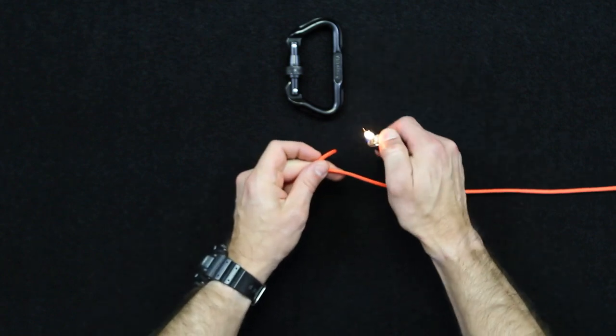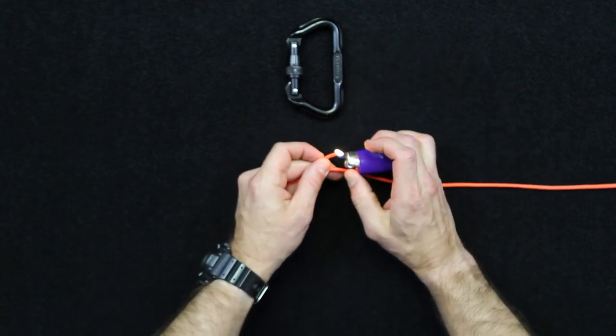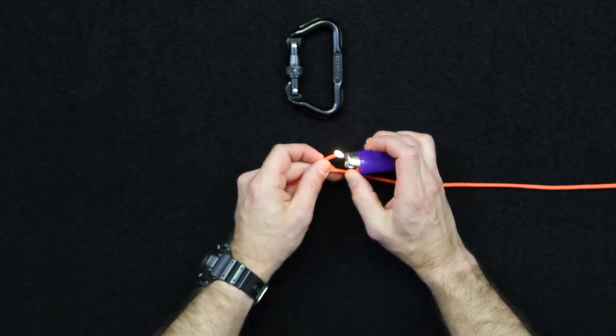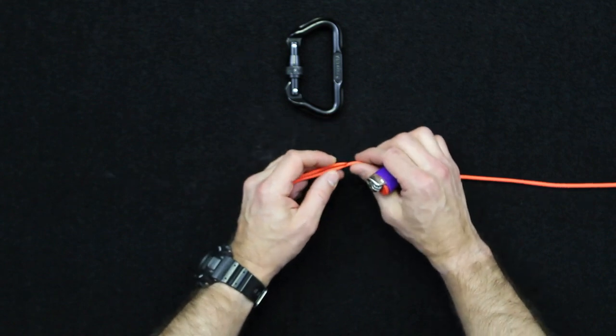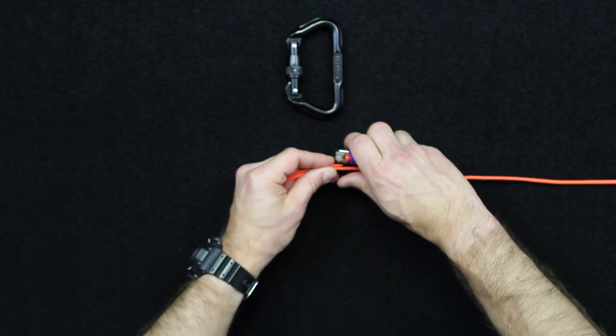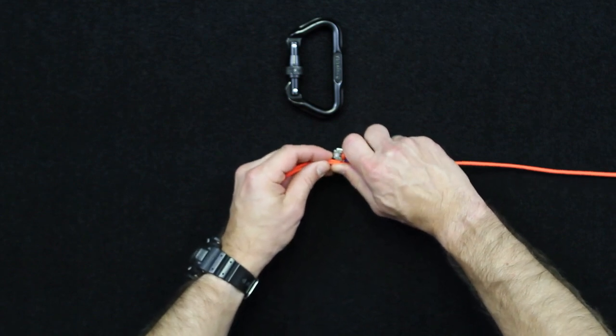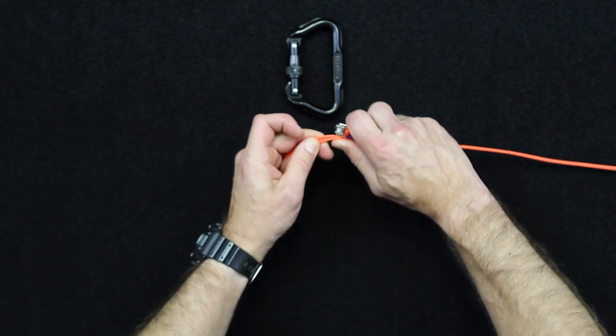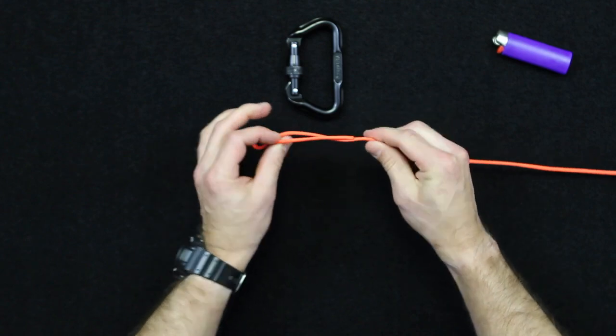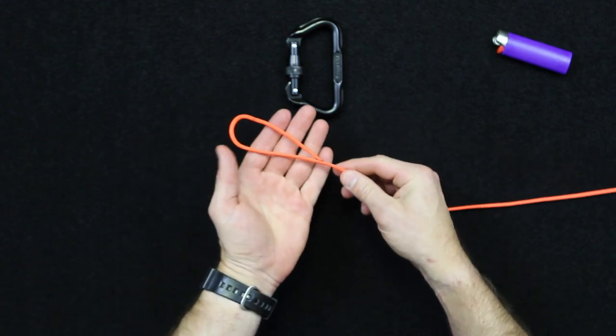So now that I've got that size, what I'm going to do is come over here, and I'm going to fuse this paracord. So I'll wait until this gets liquid hot, and then fuse that piece of paracord to itself, just like that.